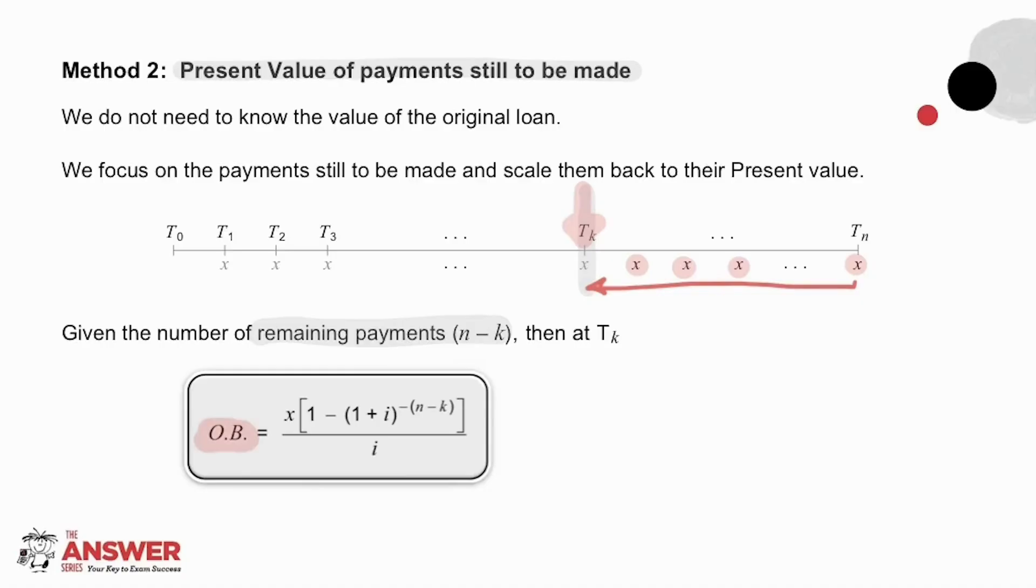In other words, the amount still owing on the loan at time period Tₖ is the present value of the number of payments still owing. So here is our present value annuity formula. This is the second way we use to calculate the outstanding balance, where here we put in the number of payments still to be made.